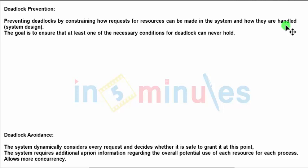Deadlock avoidance, on the other hand, checks every step to see whether the system is going through any problem. For deadlock prevention, we try to avoid at least one of the four deadlock conditions: mutual exclusion, hold and wait, no preemption, and circular wait. If at least one is avoided, a deadlock will not occur.